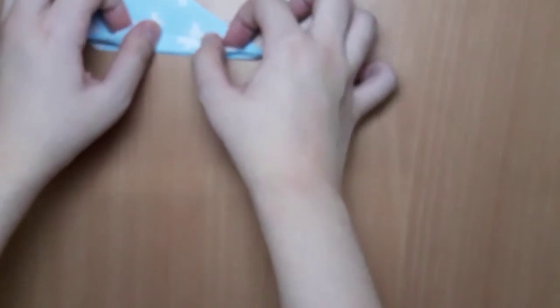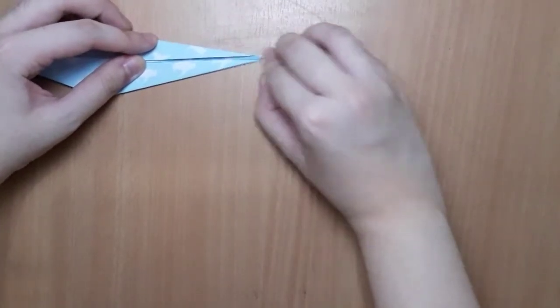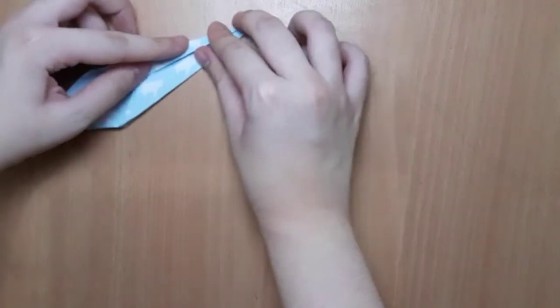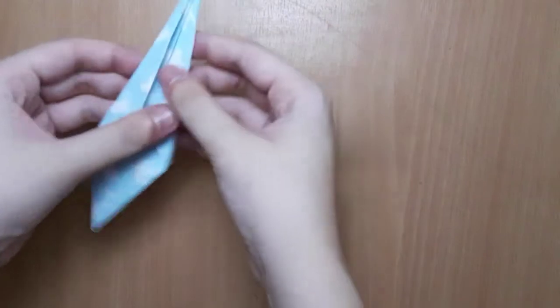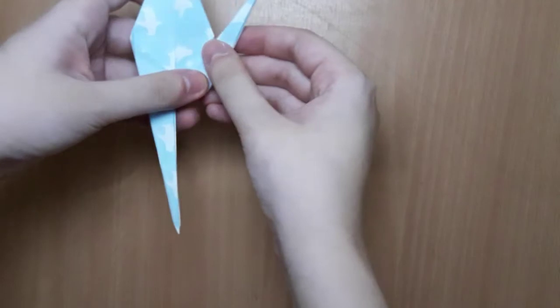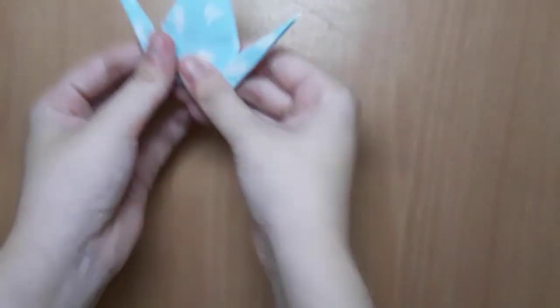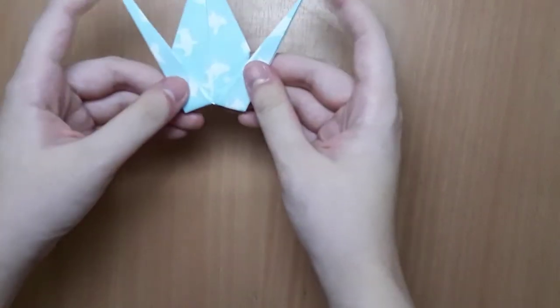Then you come back. Now we've got two of these things. You're going to fold it up to where you want the head and the tail to be. As you can see, the crane is already kind of taking shape. Head and tail.